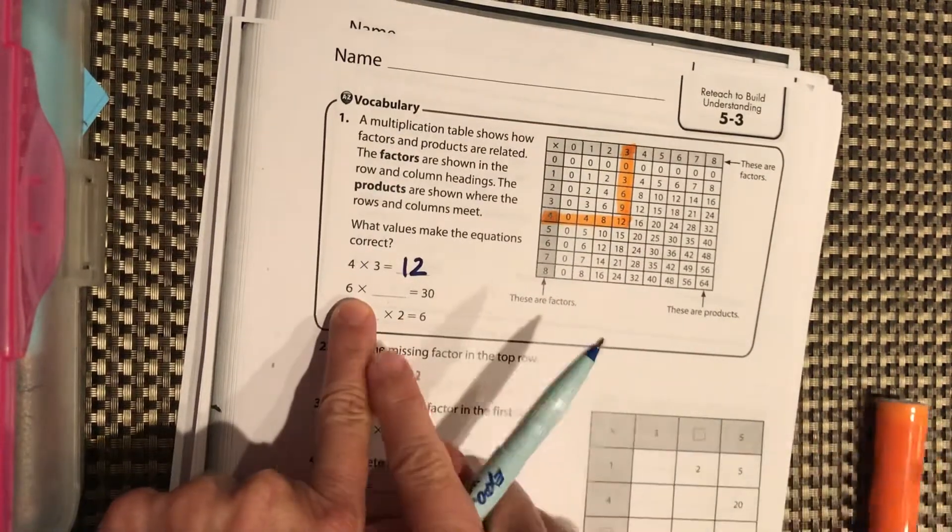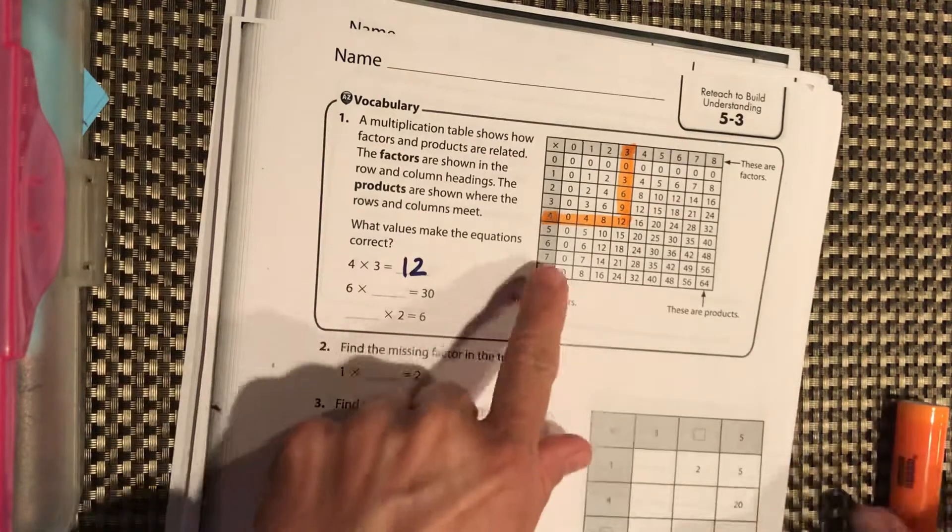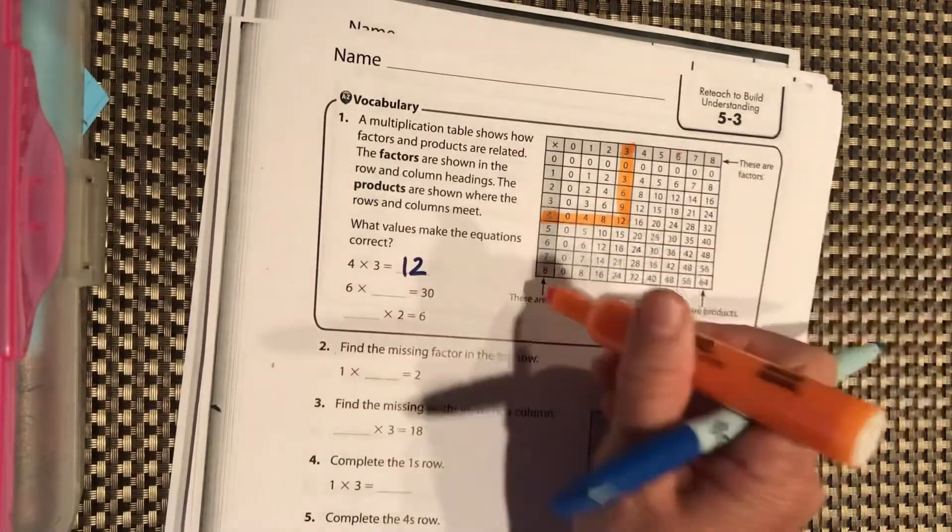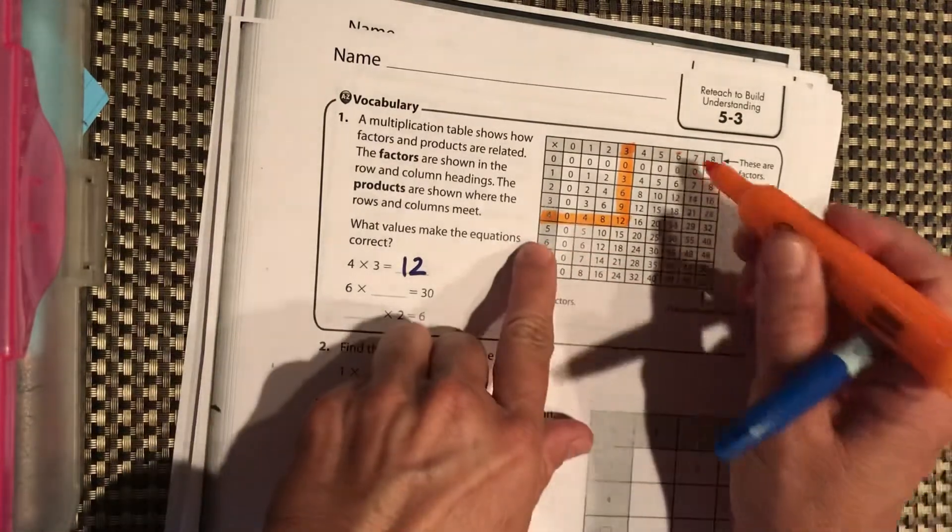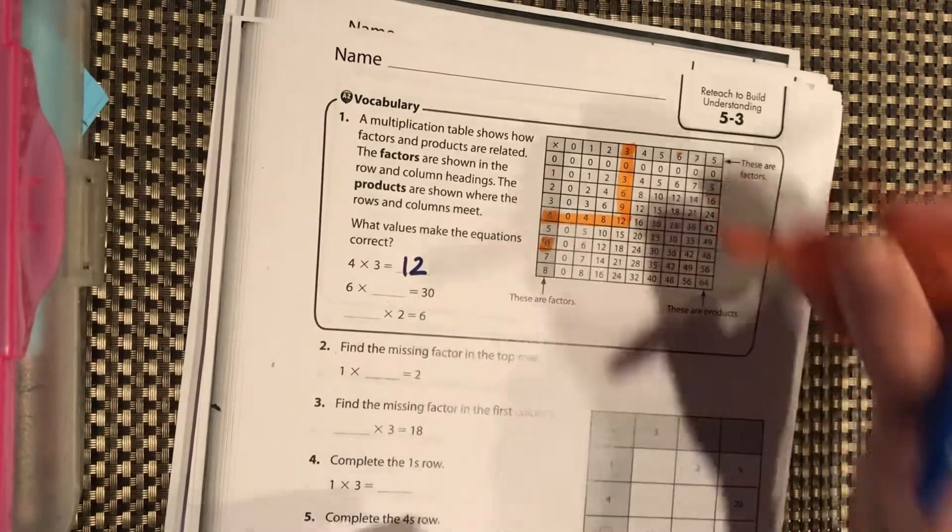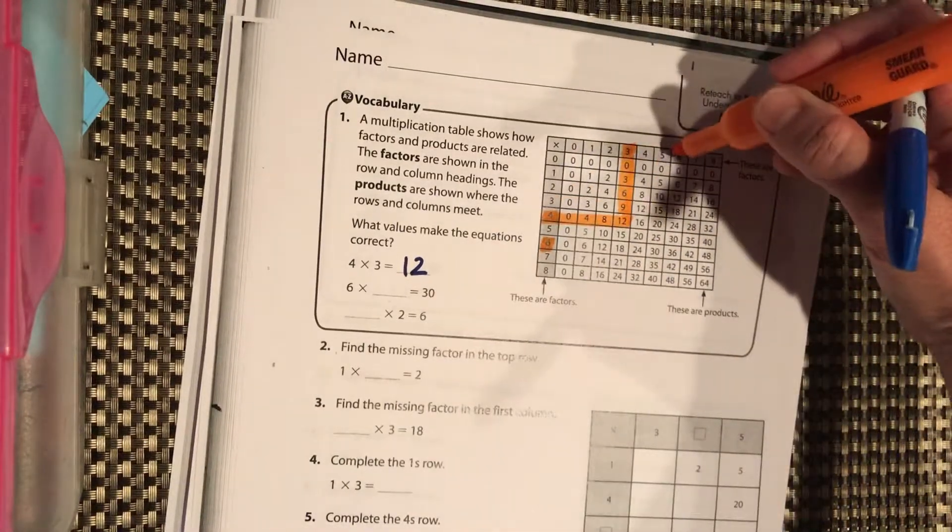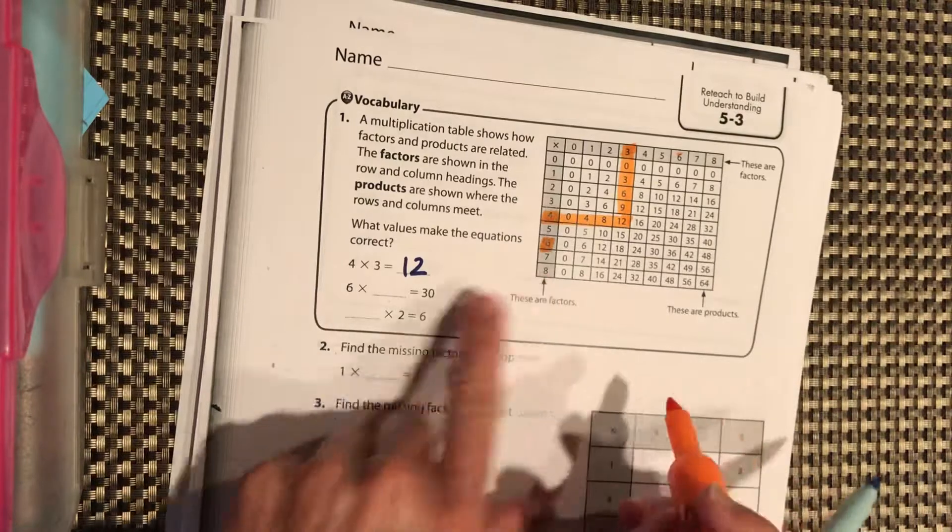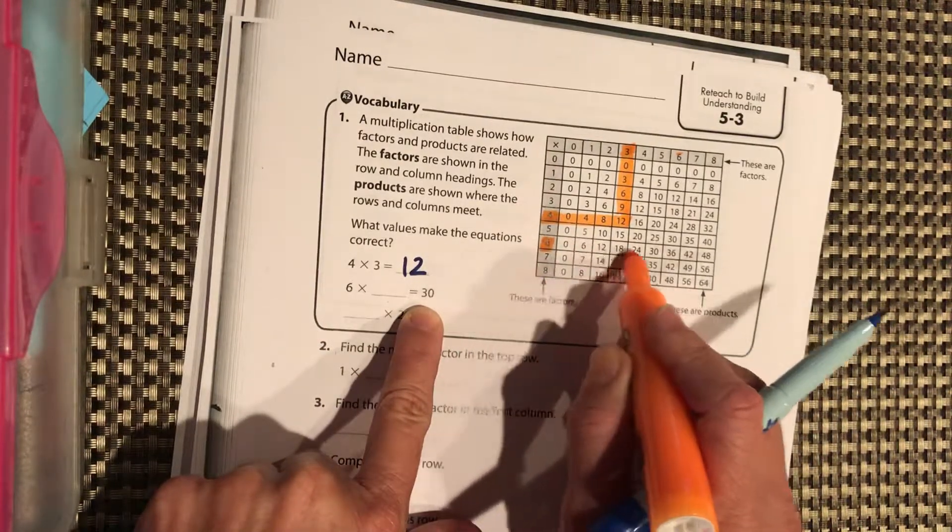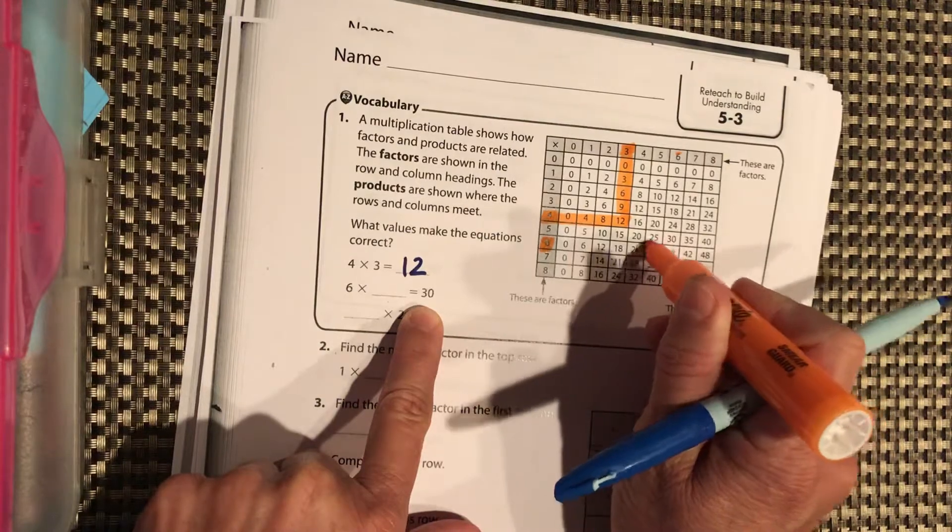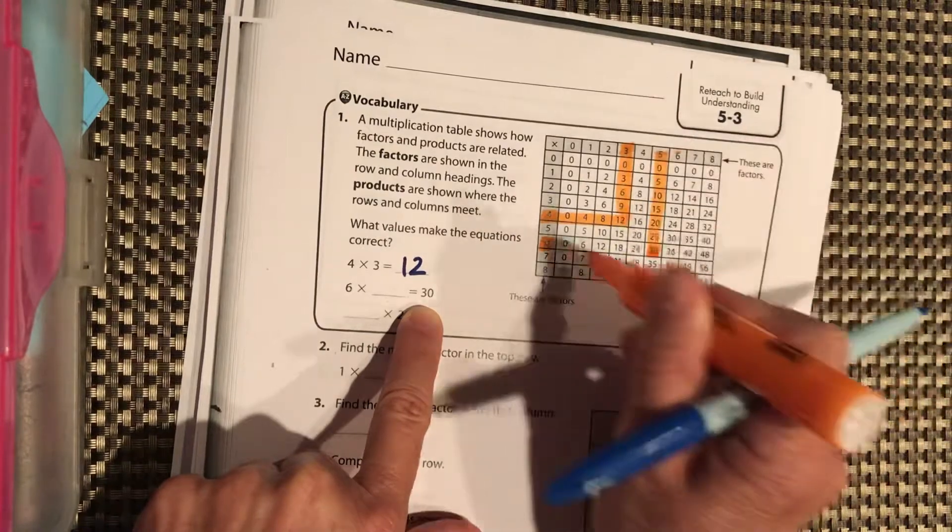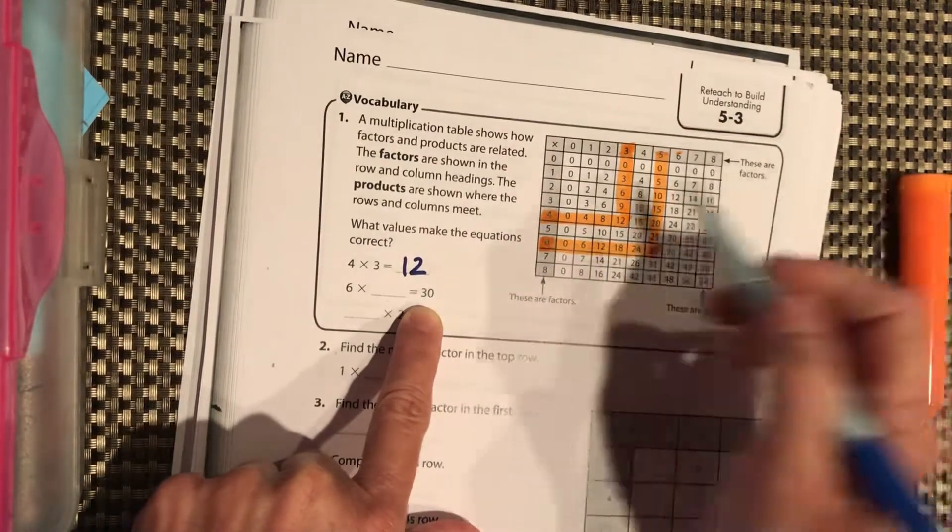Now we know one of the factors and the product. Let's look at 6, and it doesn't matter if you use 6 up here or 6 here because it's a factor times a factor. So let's just start here. 6, and we want to know what factor up here we multiply by to end at 30. We just start with one of our factors and go across until we see 30, which is right here, and then we can go straight up, so that other factor is 5.